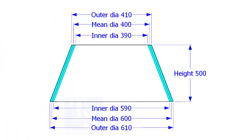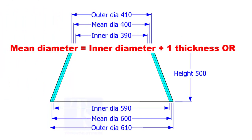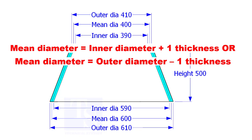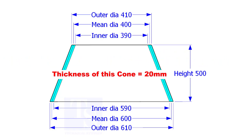Look at the cross section of the cone. What is the mean diameter? It is the center diameter of a circle or a sphere. For example, suppose the inner diameter is 1000 mm and the thickness of the cone is 20 mm, then the mean diameter shall be 1000 plus 20 equal to 1020 mm.